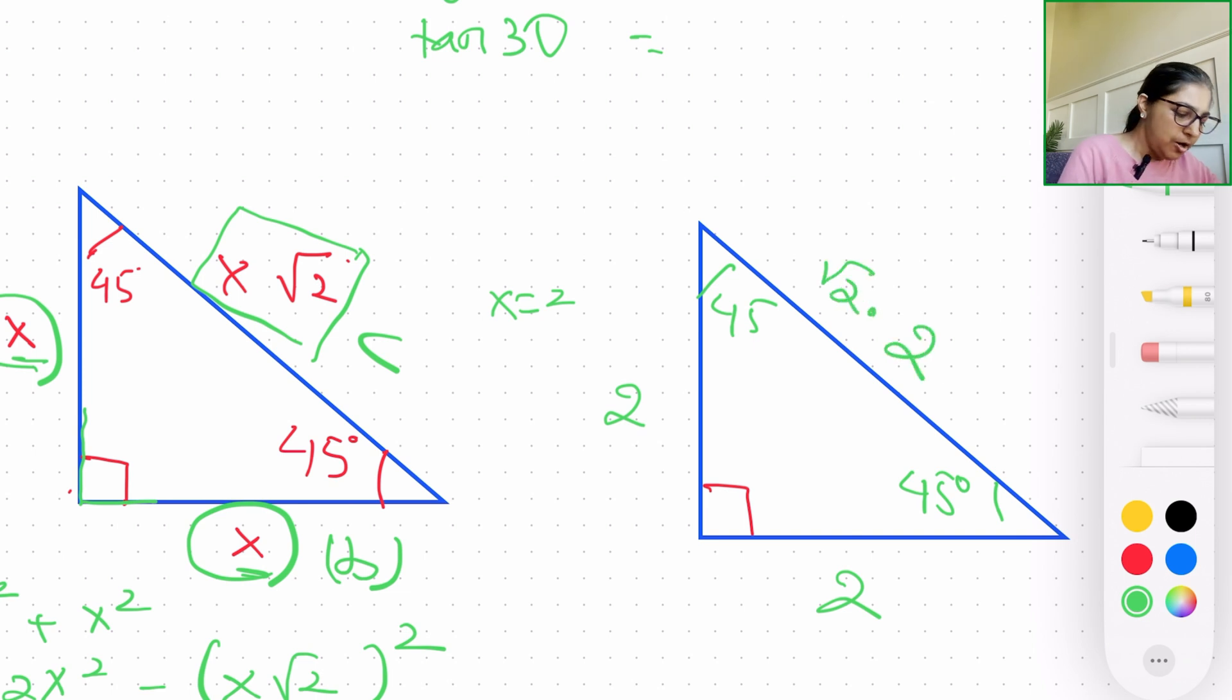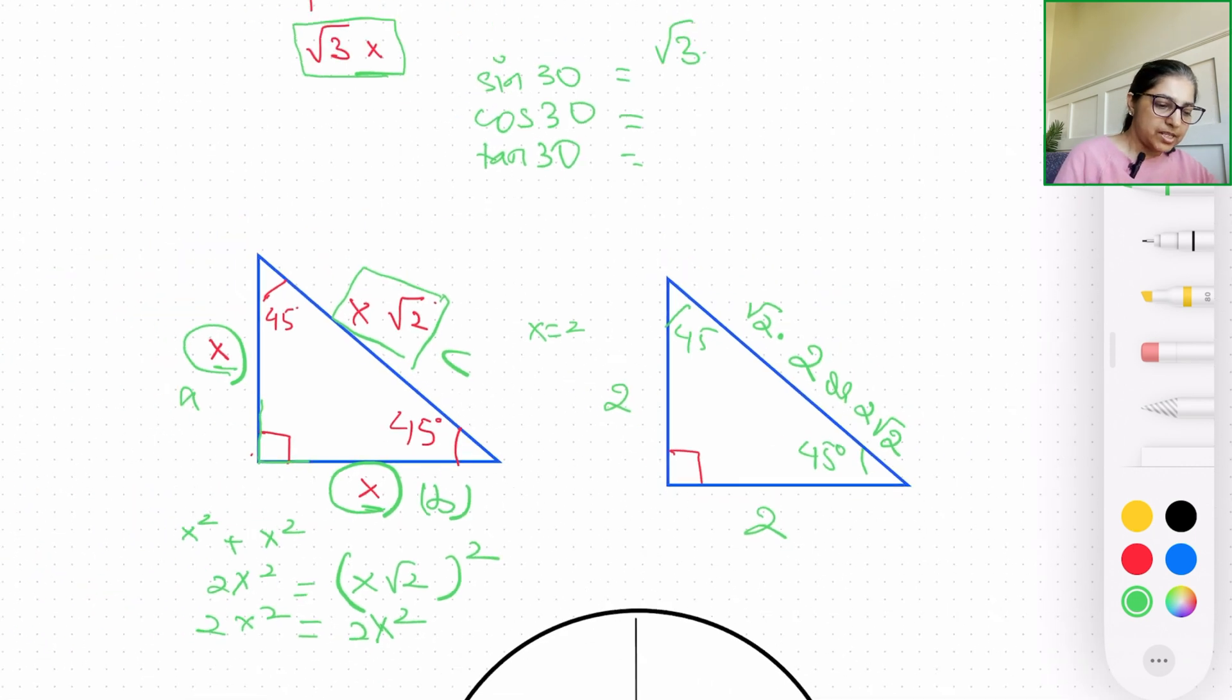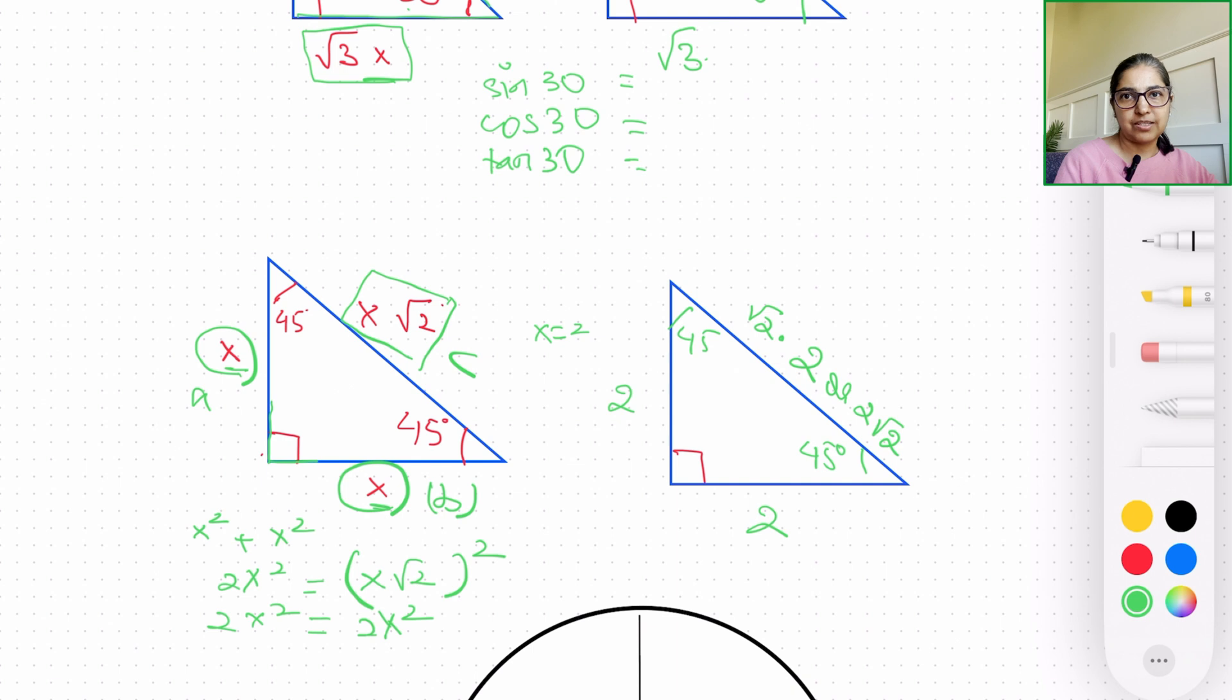So that's the basic essence of these special right triangles: 3-4-5, 30-60-90, 45-45-90, the most common ones that are used in trigonometry to figure out some analysis.